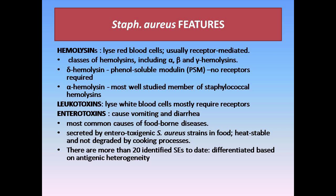Alpha hemolysin is the most well-studied member of staphylococcal hemolysins. Leukotoxins lyse white blood cells and most likely require receptors for their mode of action, although the receptors remained mostly uncharacterized until recently. Enterotoxins cause vomiting and diarrhea and are one of the most common causes of foodborne diseases. The toxins are secreted by enterotoxigenic strains in food. They are heat-stable, not degraded by the cooking process, and there are more than 20 identified types to date.